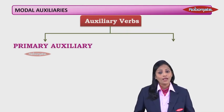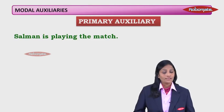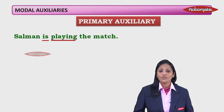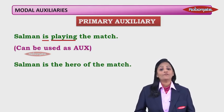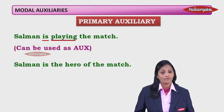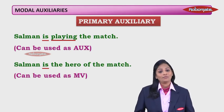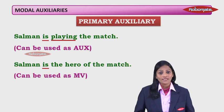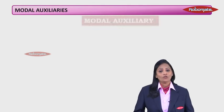Auxiliaries are of two types: the primary auxiliary and the modal auxiliary. A primary auxiliary — for example, 'Salman is playing the match' — here 'is' is the auxiliary verb. But in 'Salman is the hero of the match', 'is' is the main verb. So the same verb can function as an auxiliary or as a main verb. It can stand alone in a sentence as well as support another verb as a helping verb.